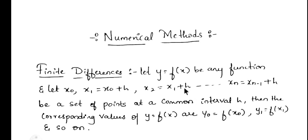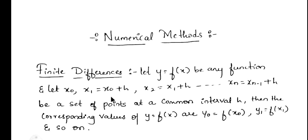Here, the variable h is nothing but the common difference between those set of points. The corresponding values of y = f(x) are: y0 = f(x0), y1 = f(x1), and so on. For example, if we consider the series 0, 1, 2, 3 and so on, the common difference between those set of points is 1, that is your h.